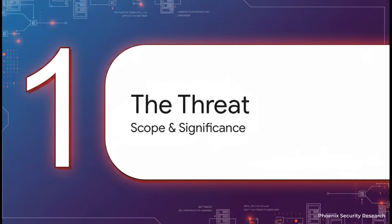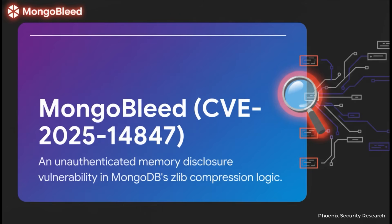Let's start with the big picture. What makes this vulnerability so critical? It really comes down to two things: an attacker needs zero authentication, and it hits a core feature that's on by default. At its heart, MongoBleed is a bug in how MongoDB handles compressed network messages, specifically using Zlib. An attacker with no credentials at all can send a very specific kind of message that tricks the server into sending back bits and pieces of its own memory. This memory is uninitialized for the current request, but it's full of leftover data from whatever the server was doing just moments before.